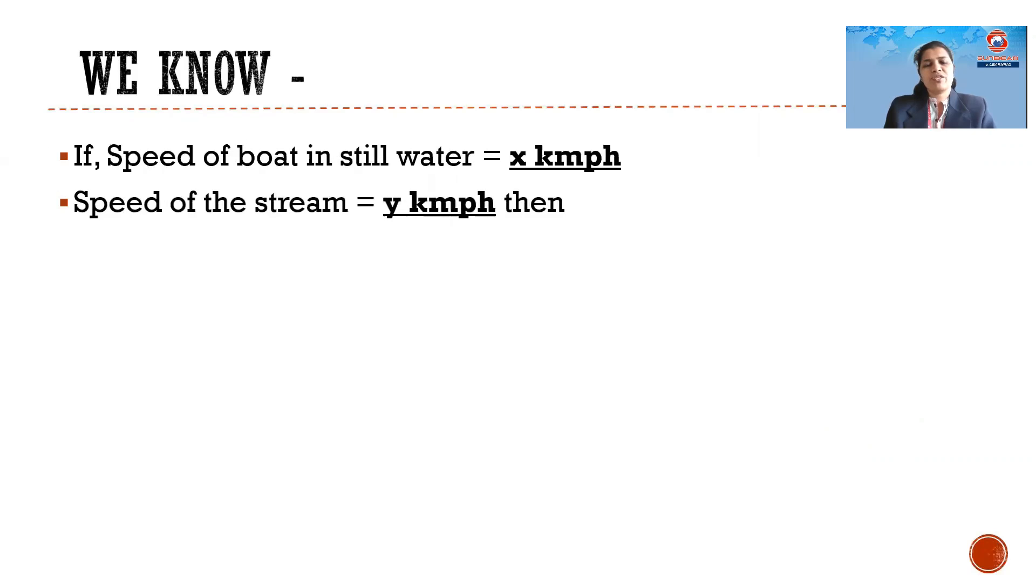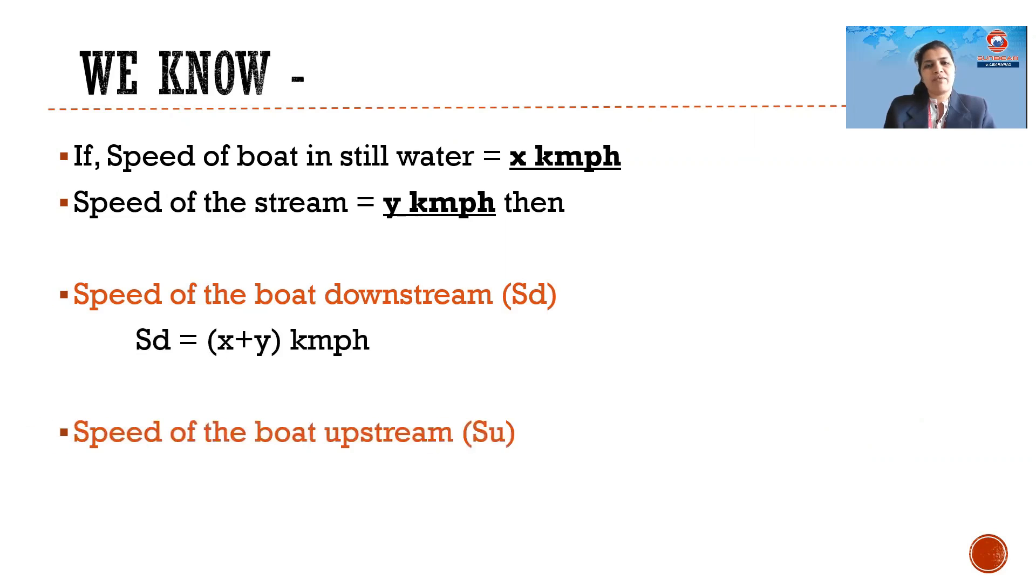We know speed of boat in still water is x kilometers per hour. Speed of stream is denoted as y kilometers per hour. So we can say speed downstream SD is x plus y and speed upstream SU is x minus y.